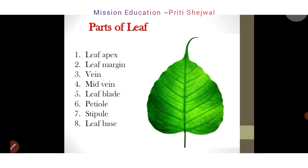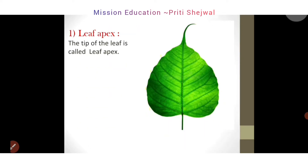Let's see each part one by one and locate each part of the leaf by its name. So let's start. First is leaf apex — the tip of the leaf is called the leaf apex. In this figure, where is the leaf apex? Can you tell? Yes, the tip of the leaf is called the leaf apex.